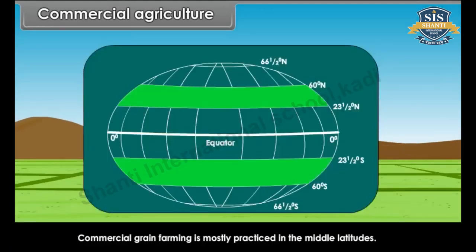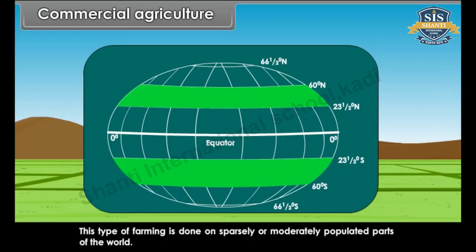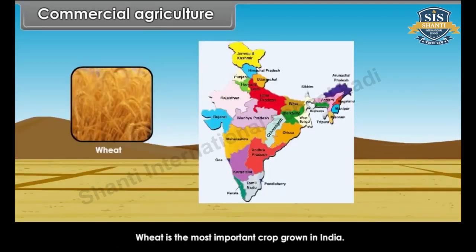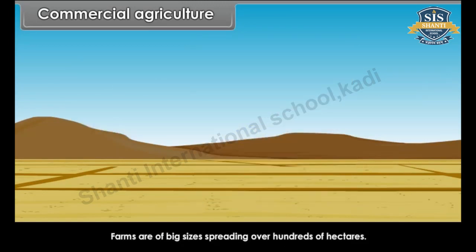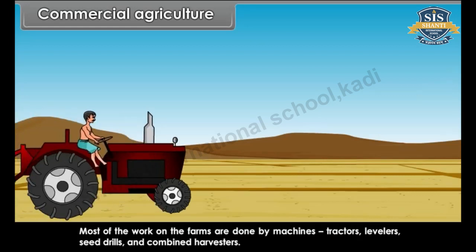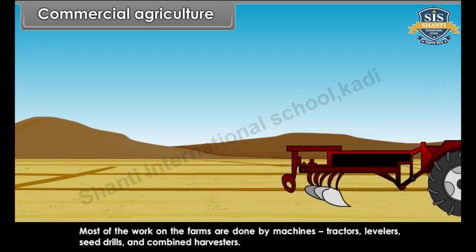Commercial grain farming is mostly practiced in the middle latitudes. This type of farming is done on sparsely or moderately populated parts of the world. Wheat is the most important crop grown. Farms are of big sizes, spreading over hundreds of hectares. Most of the work on the farms is done by machines: tractors, levelers, seed drills and combined harvesters.